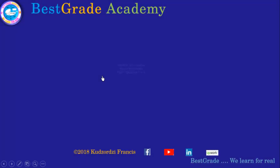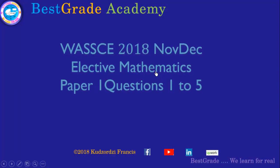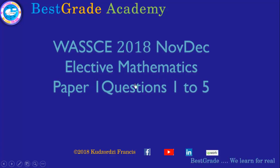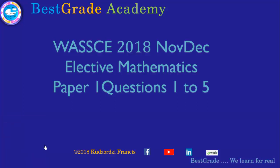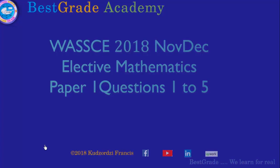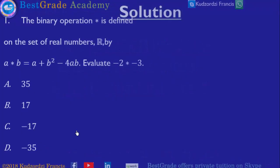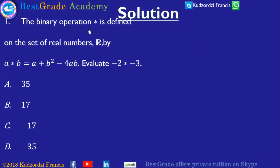We are solving the NOVEC 2018 Elective Mathematics Paper 1, questions 1 to 5. The next video will solve questions 6 to 10 in order. The binary operation star is defined on the set of real numbers by A★B = A + B² minus 4AB.